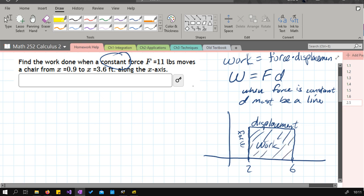For this first problem, when your force is constant, you just have to figure out the displacement. We'll do big minus small, so that's 3.6 minus 0.9. That's the displacement. The force they already tell us is 11.